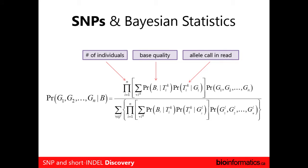A lot of the variant callers use a Bayesian scaffold for doing the variant calling. Bayesian statistics basically rely more on prior probabilities and observations rather than frequentist statistics. What goes into these calculations includes the number of individuals in your population, the actual base qualities of the alleles observed in that column, as well as the actual allele column itself. This is all normalized together.